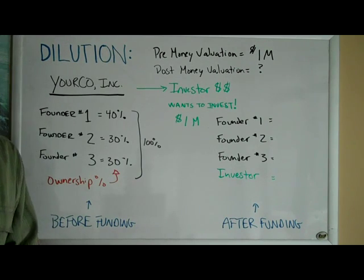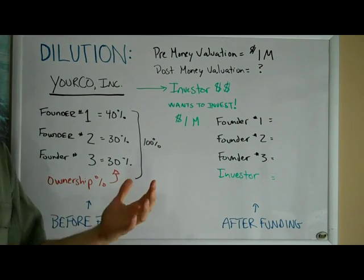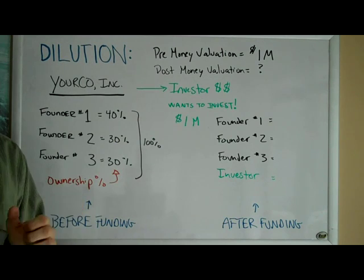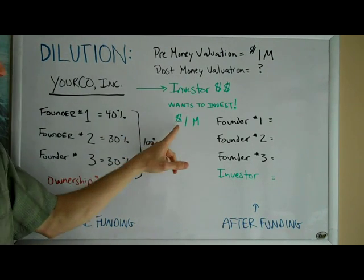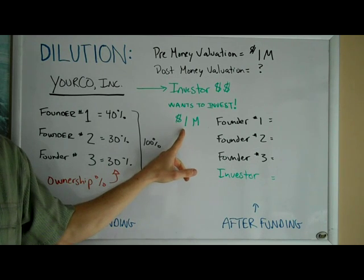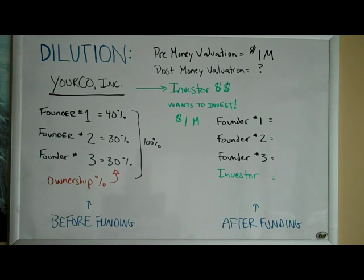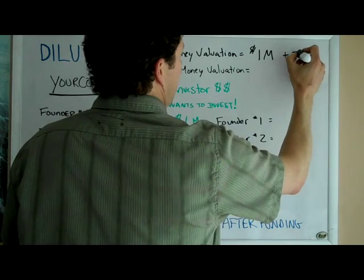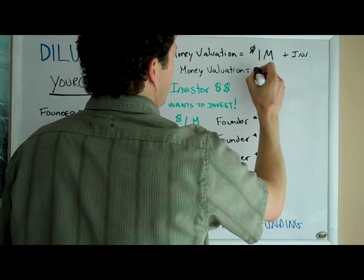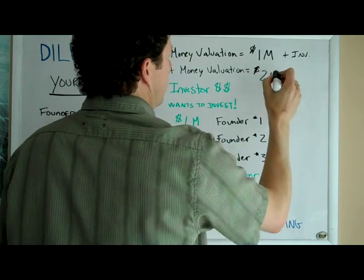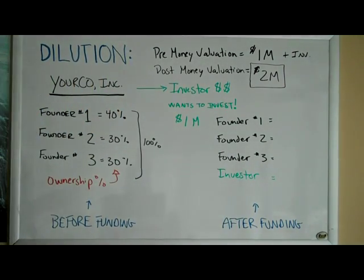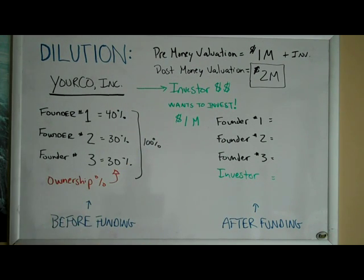Now let's talk about the funding event. The pre-money valuation of the funding event is one million dollars — you and the investor come to the agreement that your company's worth a million dollars before you put money in. The post-money valuation depends on how much money the investor invested in the company. In this case the investor is investing one million dollars, so the post-money valuation would be one million dollars plus your investment, which would equal two million dollars. Two million dollars becomes an important number because that's how much your company is worth post funding event.